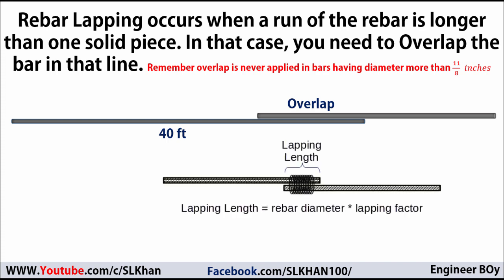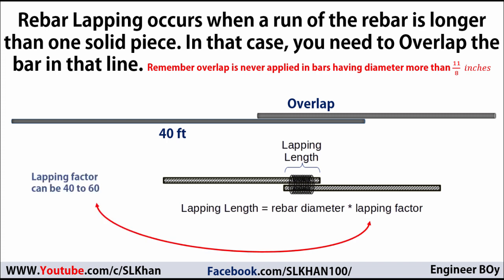The length of overlap is usually a factor of the rebar's diameter and an engineering lapping factor. The common lapping factors are 40 and 60, but the engineering specifications should always be applied. Remember, a quantity surveyor does not design overlaps — his work is to determine things from the drawings and specifications.